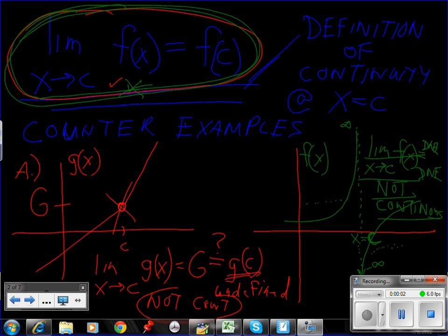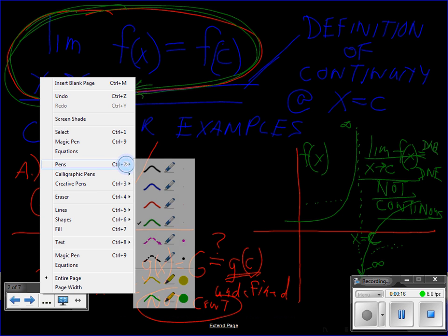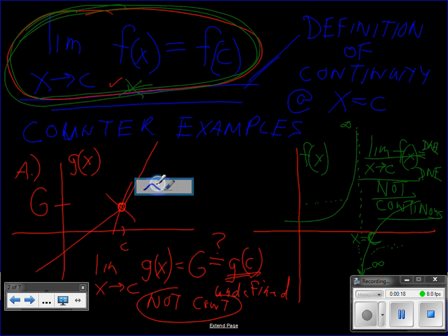Welcome back to our discussion on the definition of what continuity at a point of a function means. In our last video, we introduced this definition, and we used some counterexamples of where functions aren't continuous, and we used the definition to show us that, yes, indeed, they are not.